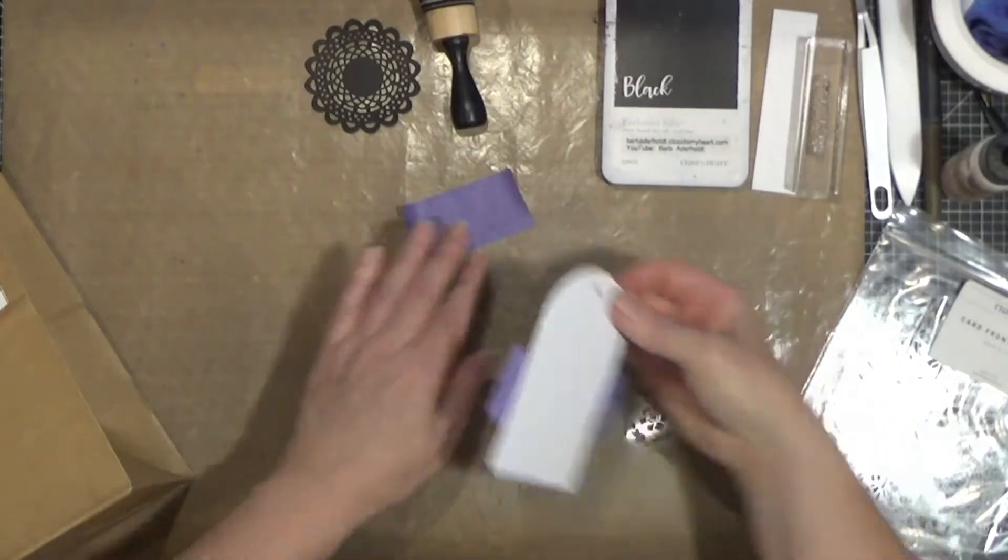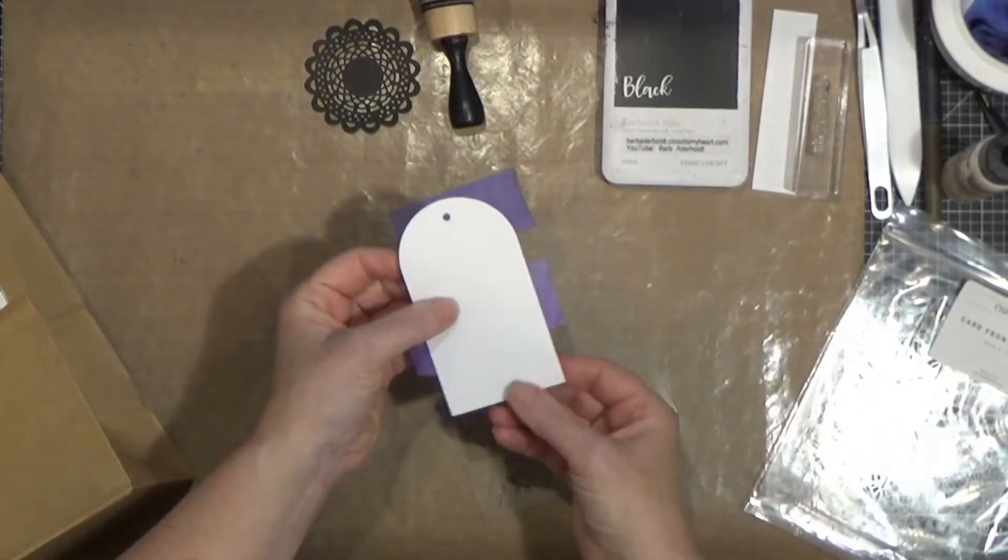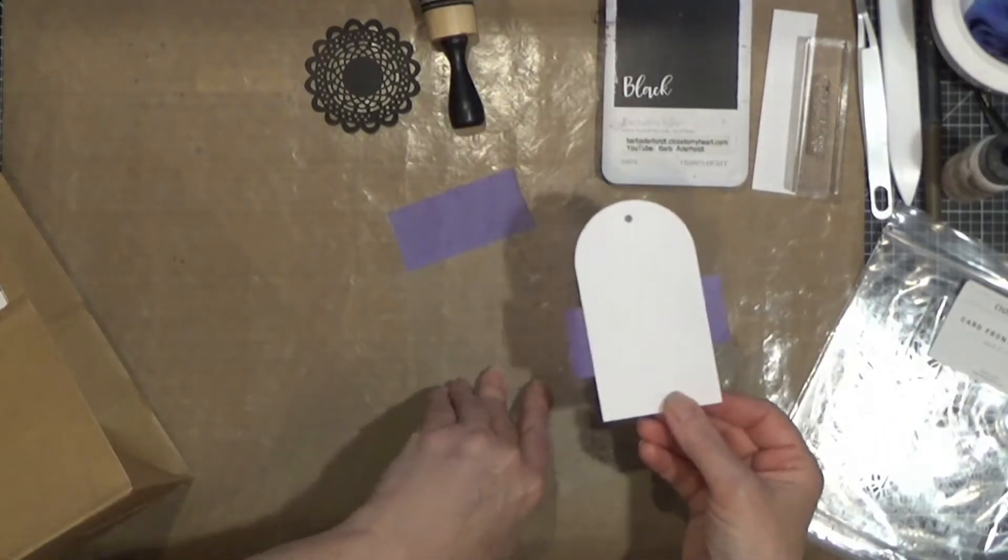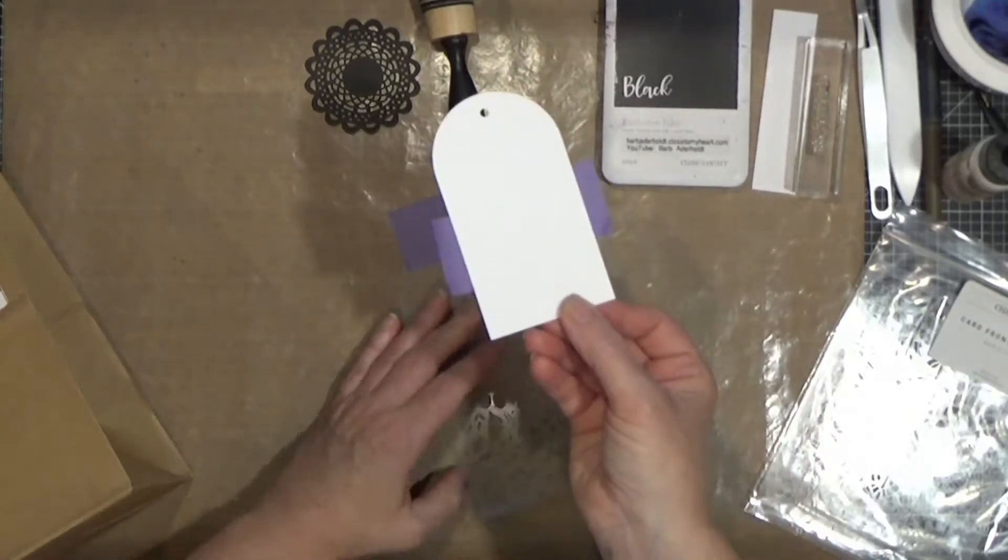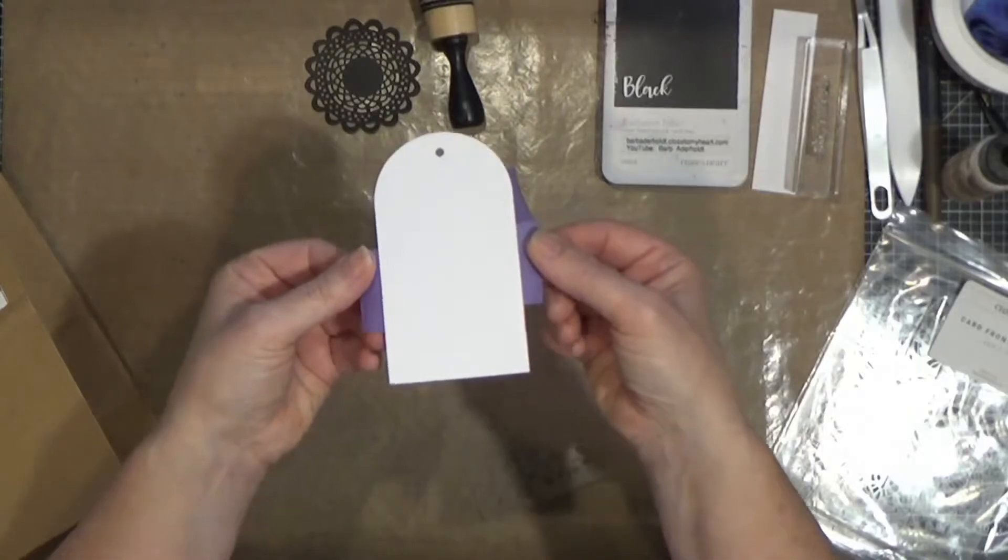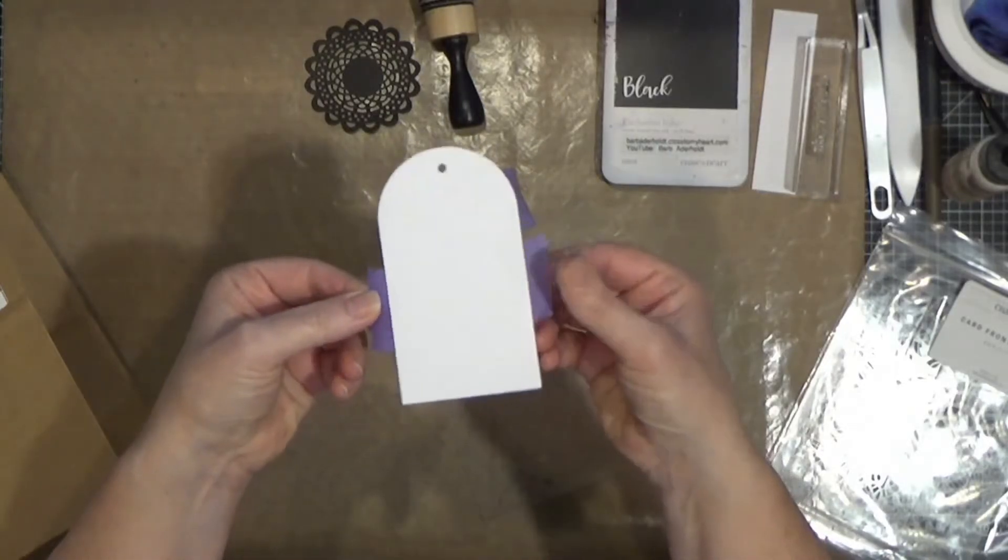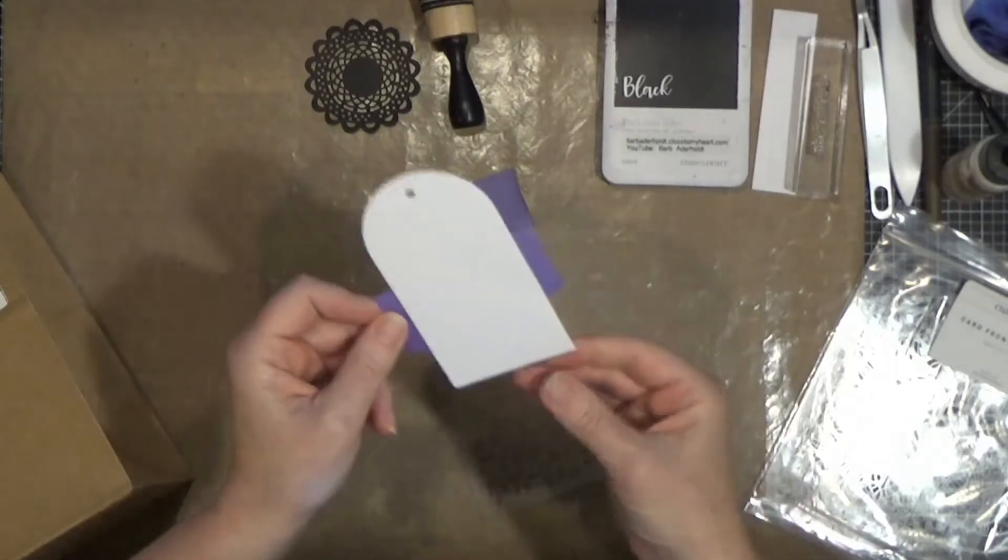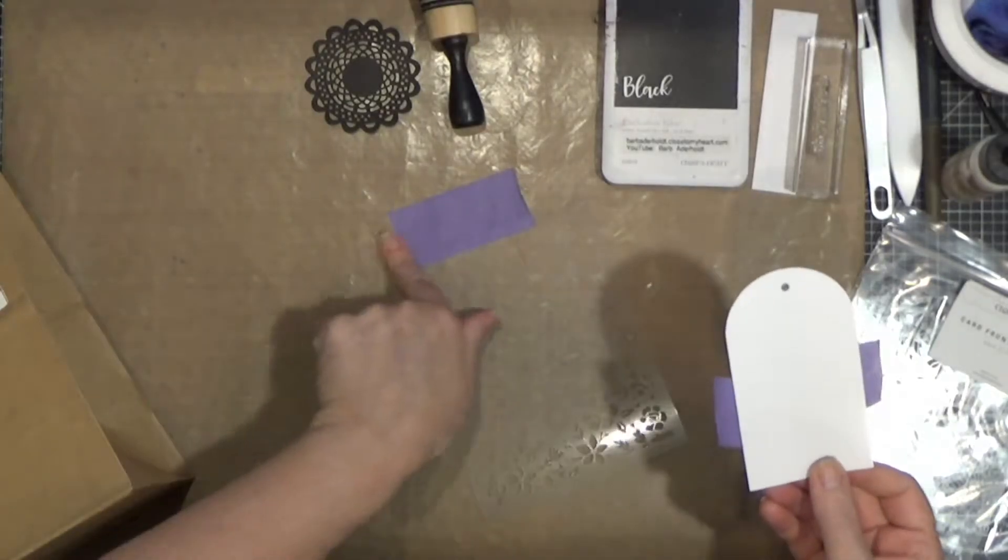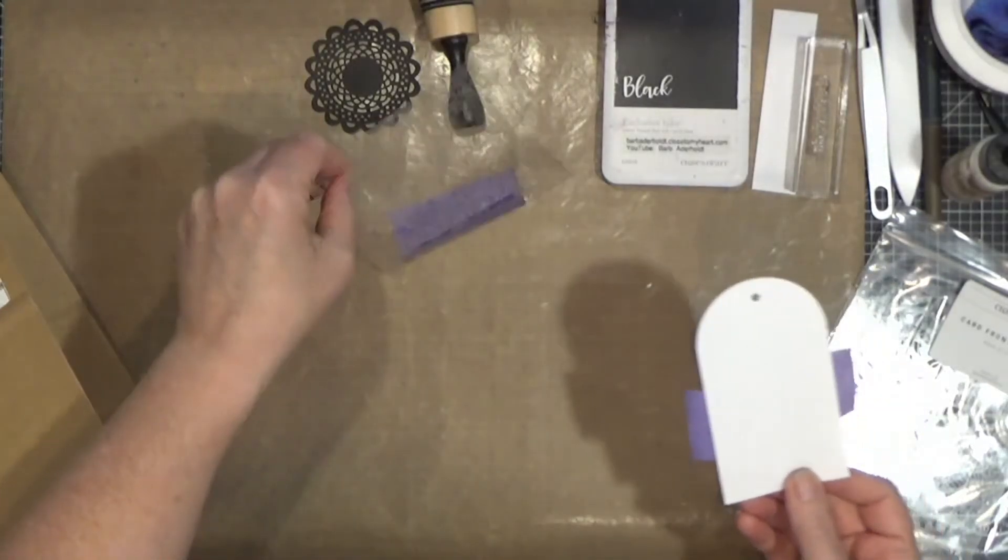The first thing I'm going to do is my stenciling. I'm keeping this super simple. So I'm using plain black ink, and I've got my ink blender. I have a piece of white daisy, and I took some purple. It's a low-tack tape, sort of like a painter's tape.